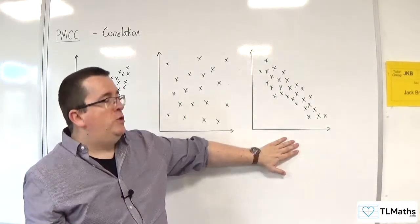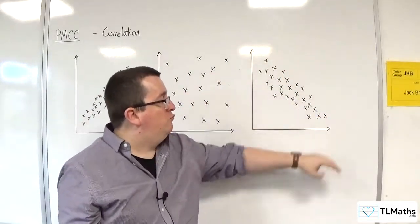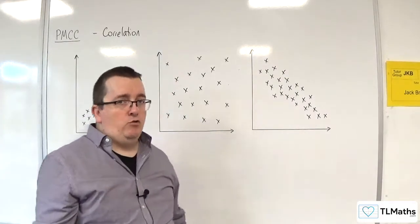With this one, negative correlation, we're starting at the top left, working our way to the bottom right. As one variable is increasing, the other is decreasing.